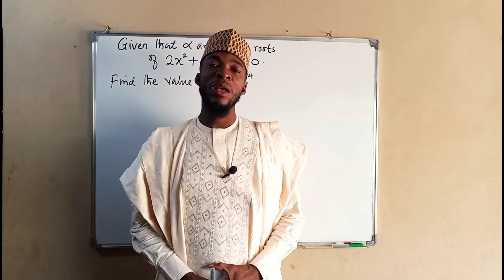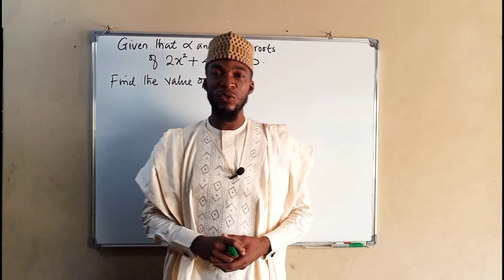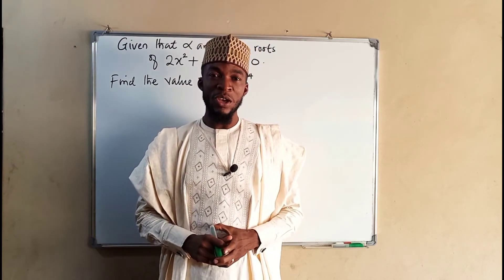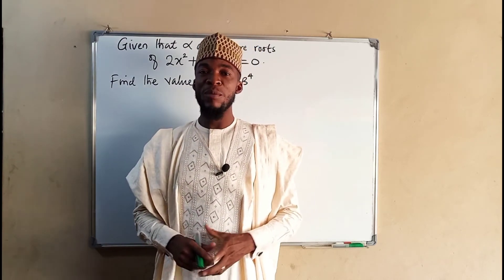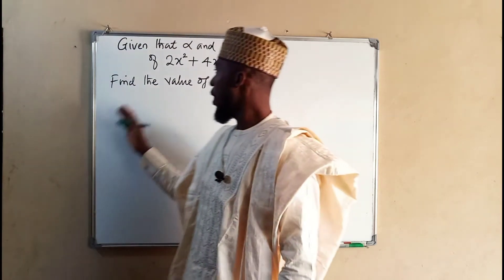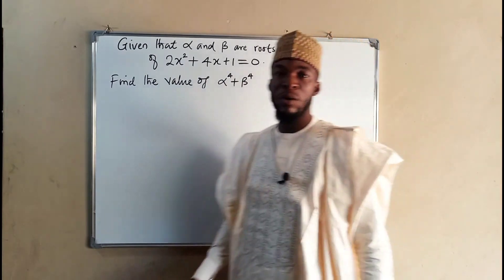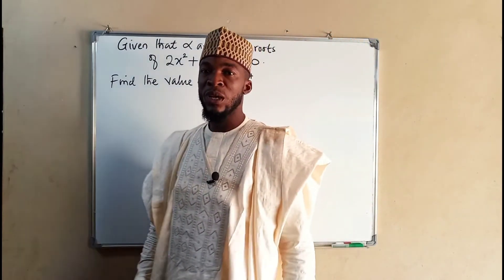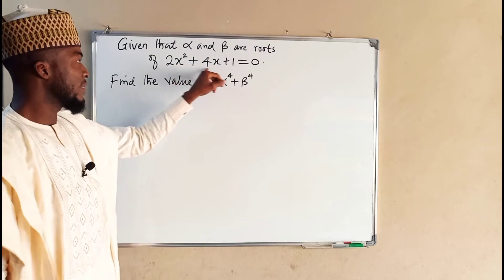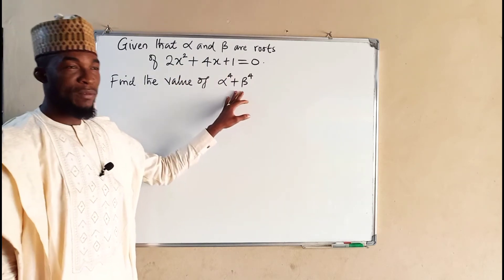Hello, good day viewers. As part of our lesson for solving problems related to symmetrical functions of quadratic roots, today I'm here with only one example to solve, which is alpha to the power of 4 plus beta to the power of 4. Given that alpha and beta are the quadratic roots of this, hence we are asked to find the value of this.